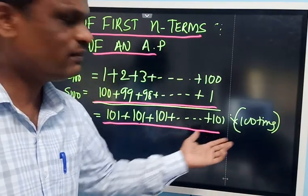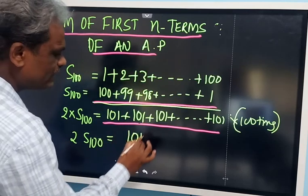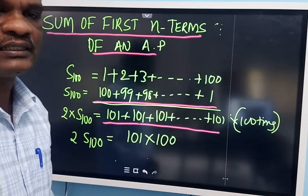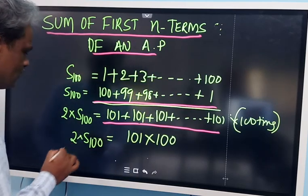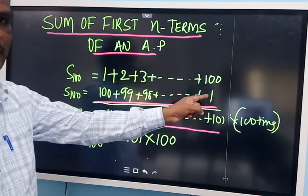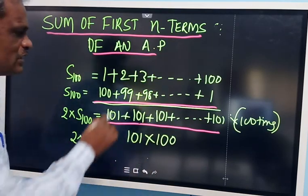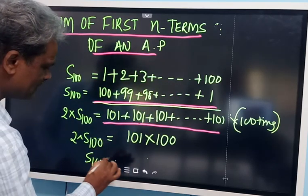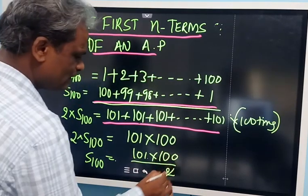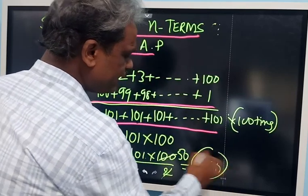Since we added 2 times, the sum of 1 to 100 is 101 into 100 divided by 2. Dividing, 50 into 101 gives 5050. This is the answer he gave to the teacher. In his mind itself he calculated: he wrote 1 to 100, reversed it, and saw that the sum is always 101. He guessed there would be 100 such 101's, so 100 into 101 divided by 2 equals 5050. That is the sum of numbers from 1 to 100.